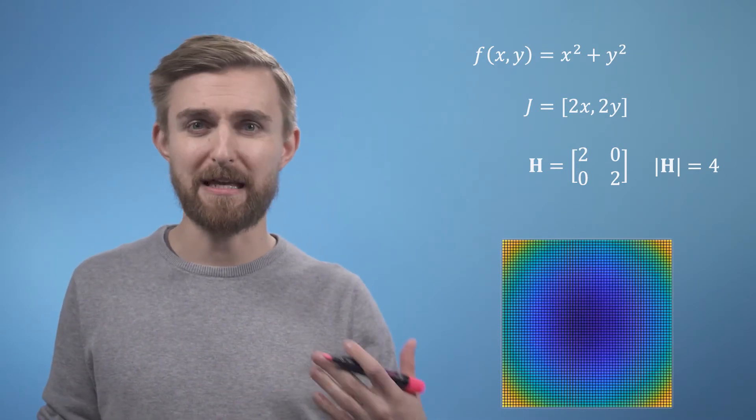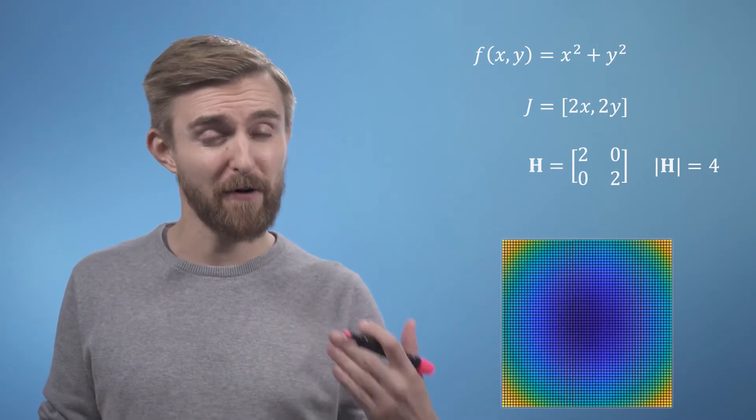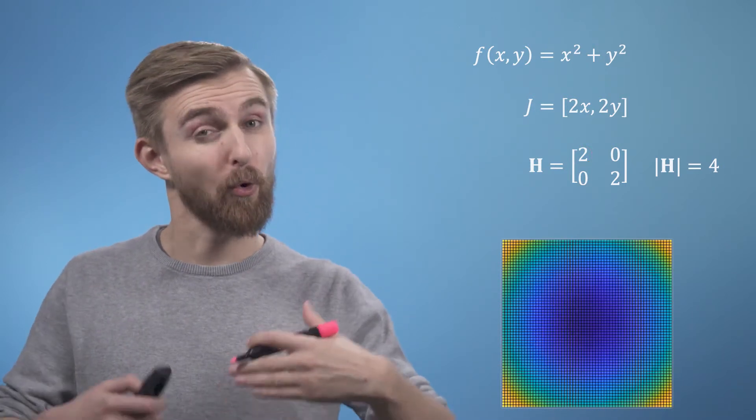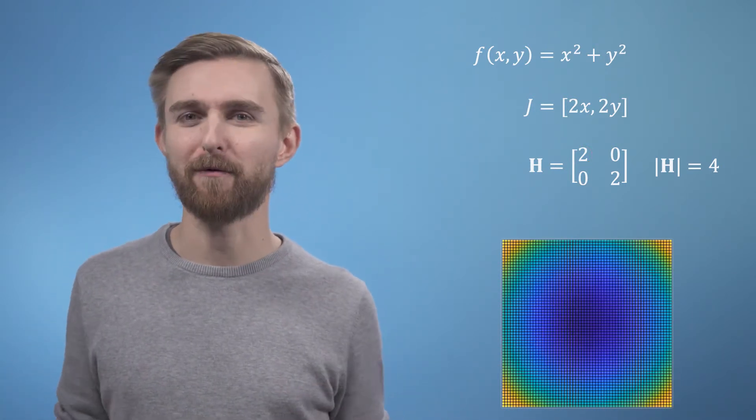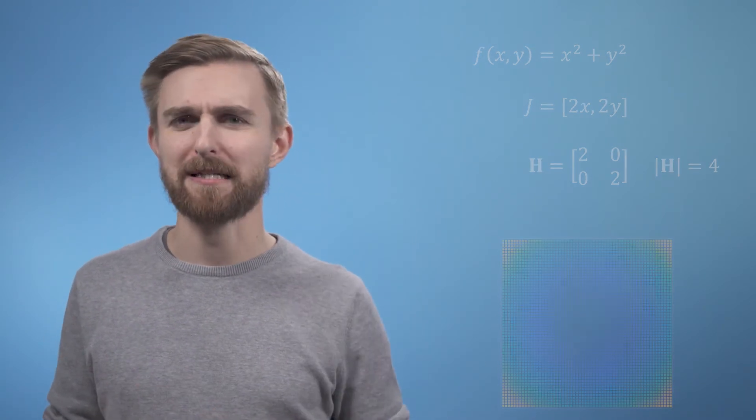we know we are dealing with either a maximum or a minimum. Secondly, we then just look at the first term, which is sitting at the top left-hand corner of the Hessian. If this guy is also positive, we know we've got a minimum, as in this particular case. Whereas if it's negative, we've got a maximum.